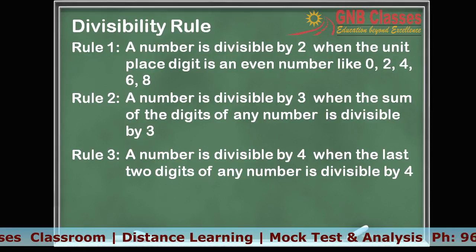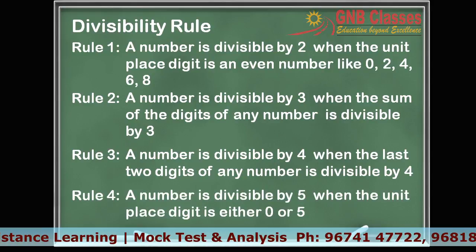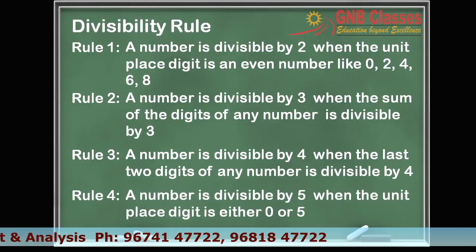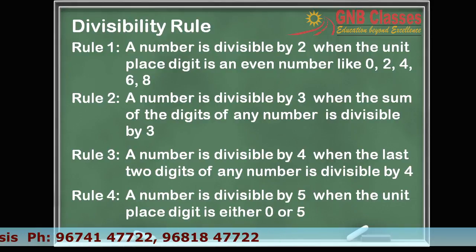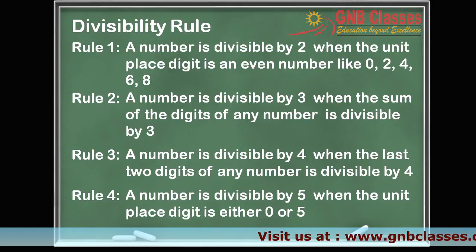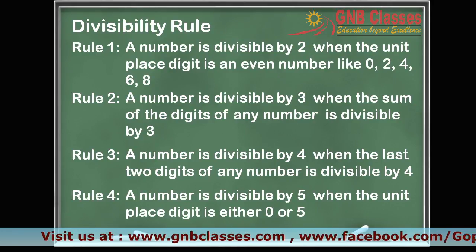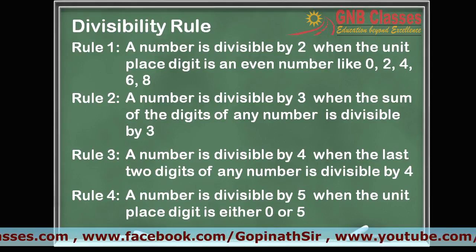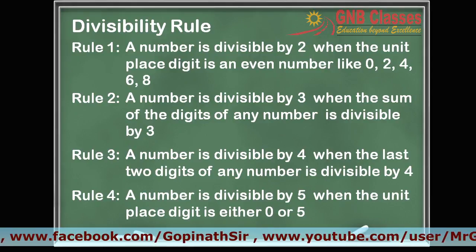Rule 4 speaks about whether a number is divisible by 5 or not. A number is divisible by 5 when the last digit ends with 0 or 5. So if the units digit is 0 or 5, then the number is divisible by 5.